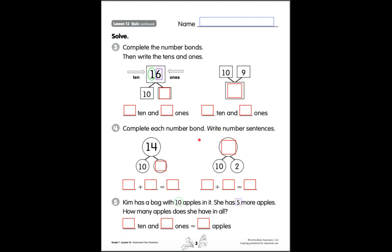Number four says complete each number bond and write number sentences. 14 is my whole number. 10 and some other number is my part. 10 and what makes 14? Then create your addition sentence, your number sentence. What plus what equals 14? Remember our total is 14.